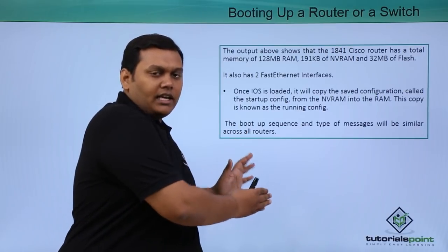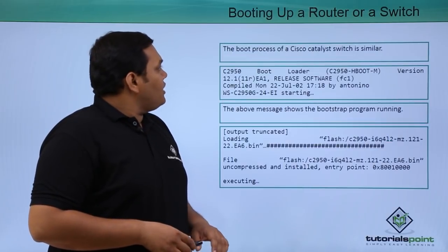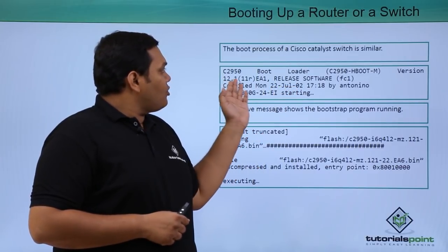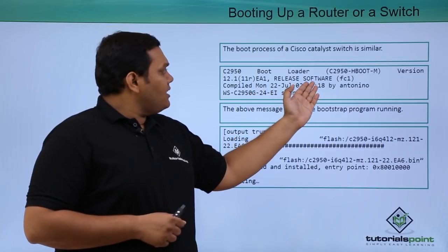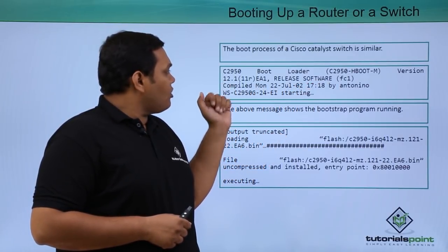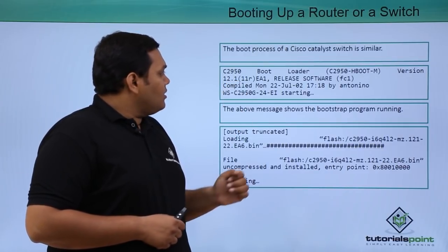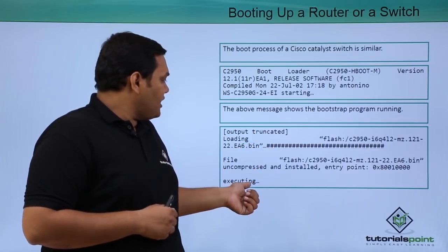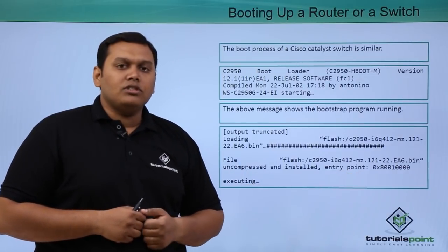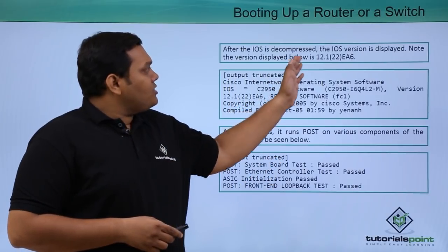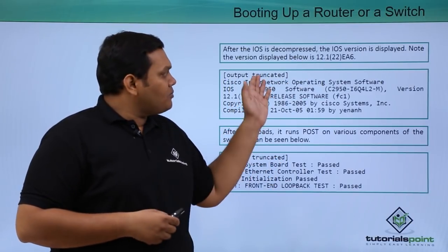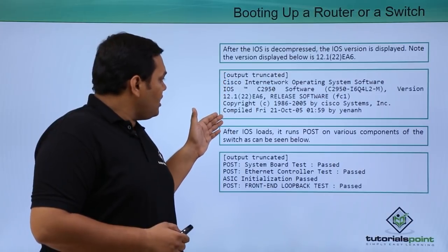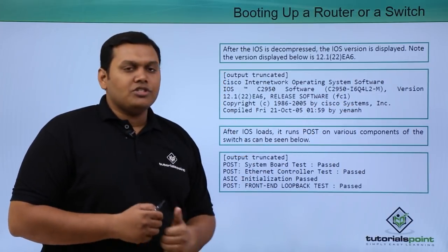Now we will look at the boot process of a Cisco Catalyst switch, which is very similar to the router. You can see the boot loader loading and it gives the release information of the software, version 12.1(11R). This shows the message of the bootstrap program running in the backend, along with decompression executing — this is how the bootstrap process starts up. After the IOS is decompressed, the IOS version is displayed, with copyright information from Cisco Systems.